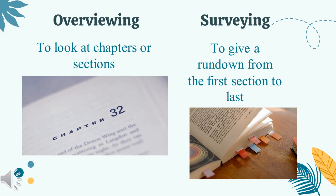Next, we have overviewing and surveying. Overviewing is to look at chapters or sections to get a general review or summary — we don't need to read everything, just look at the chapters or sections. On the other hand, in surveying, you give a rundown from the first section to last, locating and describing something without needing to read everything.